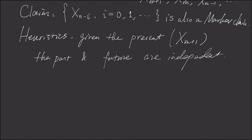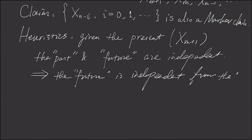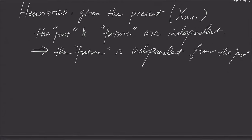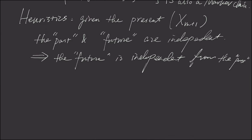So which means the future, from the future point of view, is independent with the past. And this is essentially the Markovian property, right?